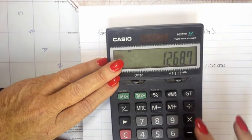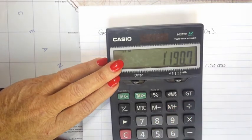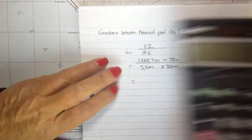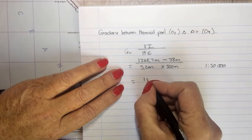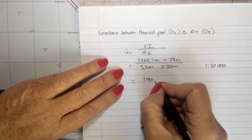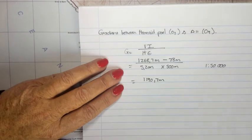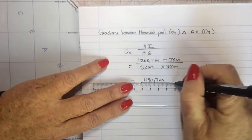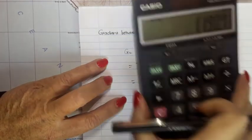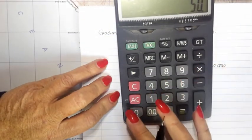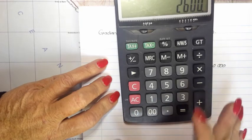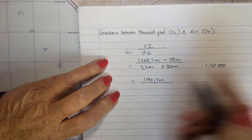So 1268.7 minus 78 meters gives 1190.7 meters. The horizontal equivalent is 5.2 times 500, which gives 2600 meters.